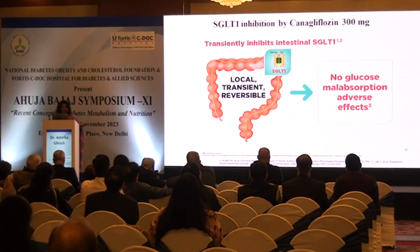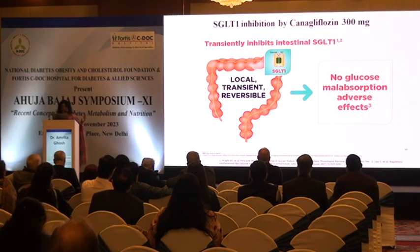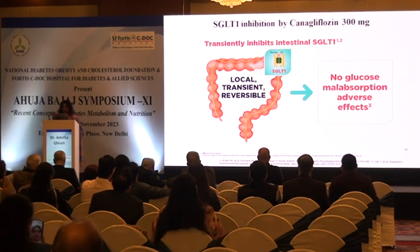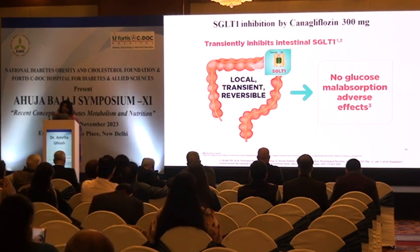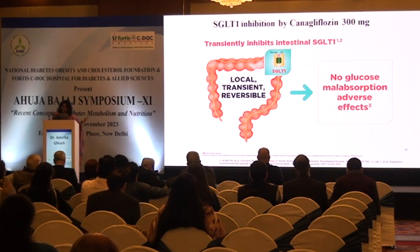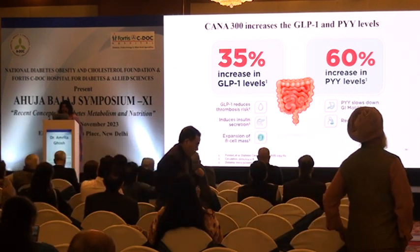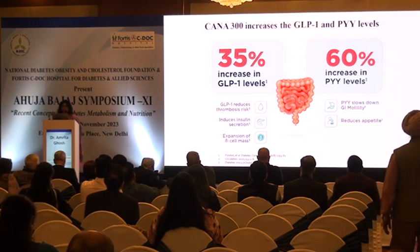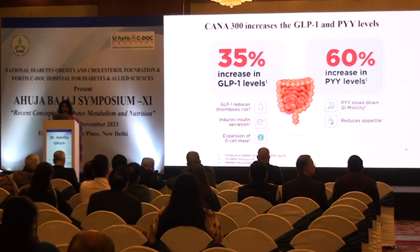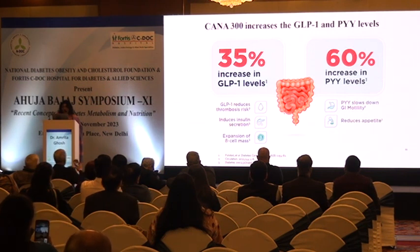SGLT1 inhibition is local, transient, and reversible, so there is no glucose malabsorption and adverse GI effects are very few. Among SGLT2 inhibitors, only sotagliflozin has the highest SGLT1 binding, and the second is canagliflozin. We do not see major GI side effects because the SGLT1 inhibition is very local and transient. This increases GLP-1 by 35%, which reduces thrombosis risk, stimulates insulin secretion, helps expand beta cell mass. Peptide YY is an anorectic peptide that reduces appetite and slows GI motility.